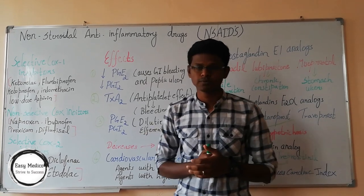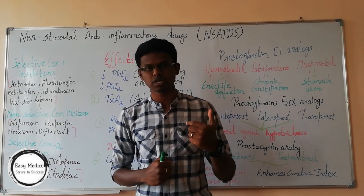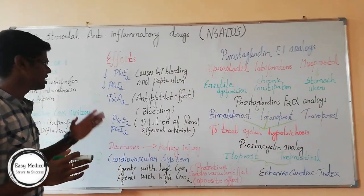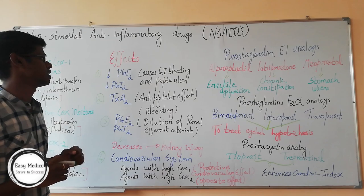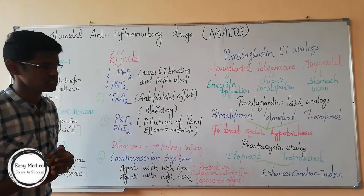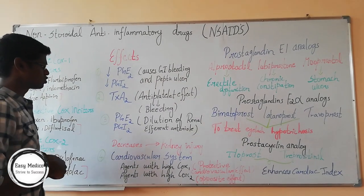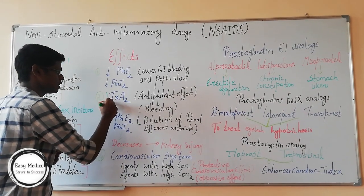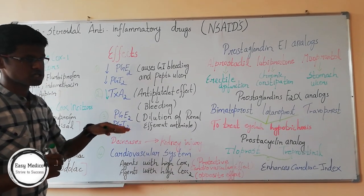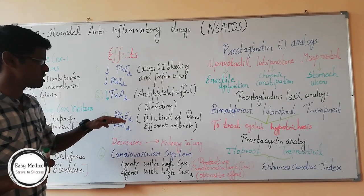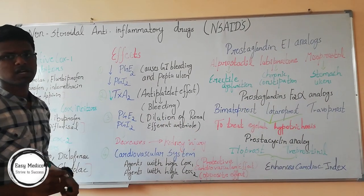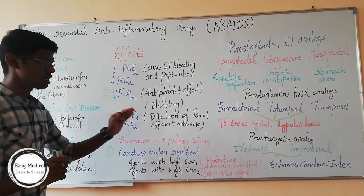Now, let's discuss the effects — what happens when there is a decrease in prostaglandin, prostacyclin, or thromboxane. A decrease in prostaglandin PGE2 and prostacyclin PGI2 causes GI bleeding, gastric bleeding, and peptic ulcer. Decrease in thromboxane A2 causes an antiplatelet effect. Decrease in PGE2 and PGI2 causes dilation of the renal efferent arteriole, and this decrease can cause kidney injury.